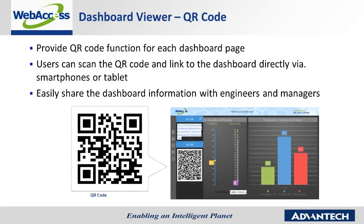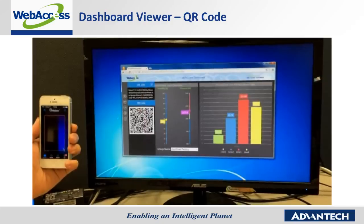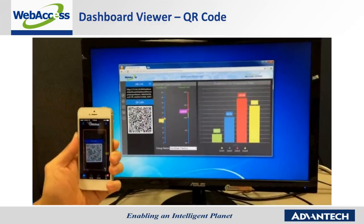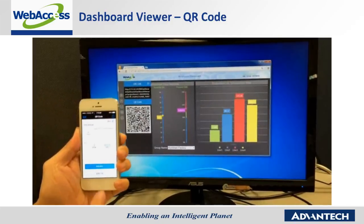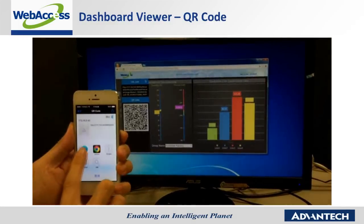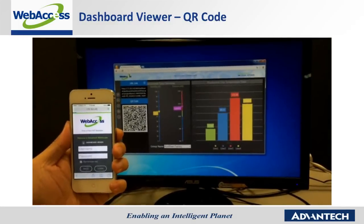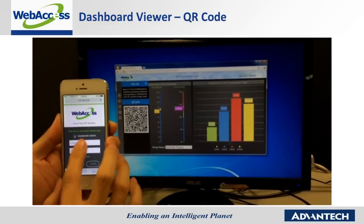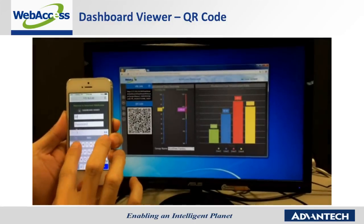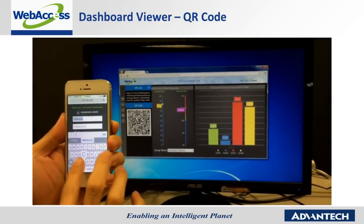Dashboard Viewer also provides a QR code function for each dashboard page. Users can scan the QR code on PCs and link to the dashboard directly via a smartphone or pad, making it easy to share dashboard information with engineers or managers. In the demo, open the QR code scanner, scan the QR code generated in Dashboard Viewer, go to the page, log in, choose the project, and the same dashboard page will display on the smartphone.